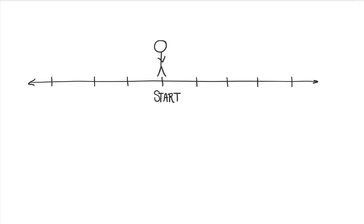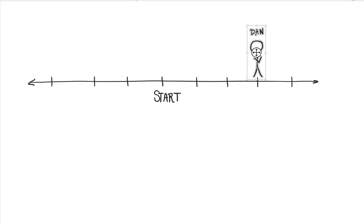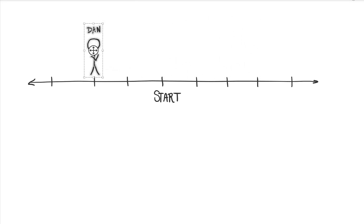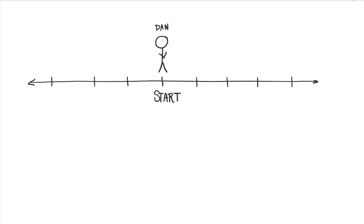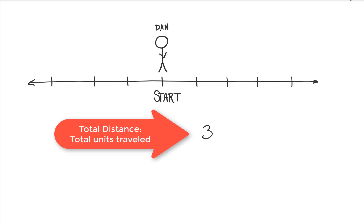What's the difference between displacement and total distance? For example, if Dan moves 3 units to the right, then 5 units to the left, then 2 units to the right — Dan's displacement is 0 because his final position matches his starting position. But the total distance he traveled — 3 units to the right, 5 units to the left, and 2 units to the right — was 10 units.